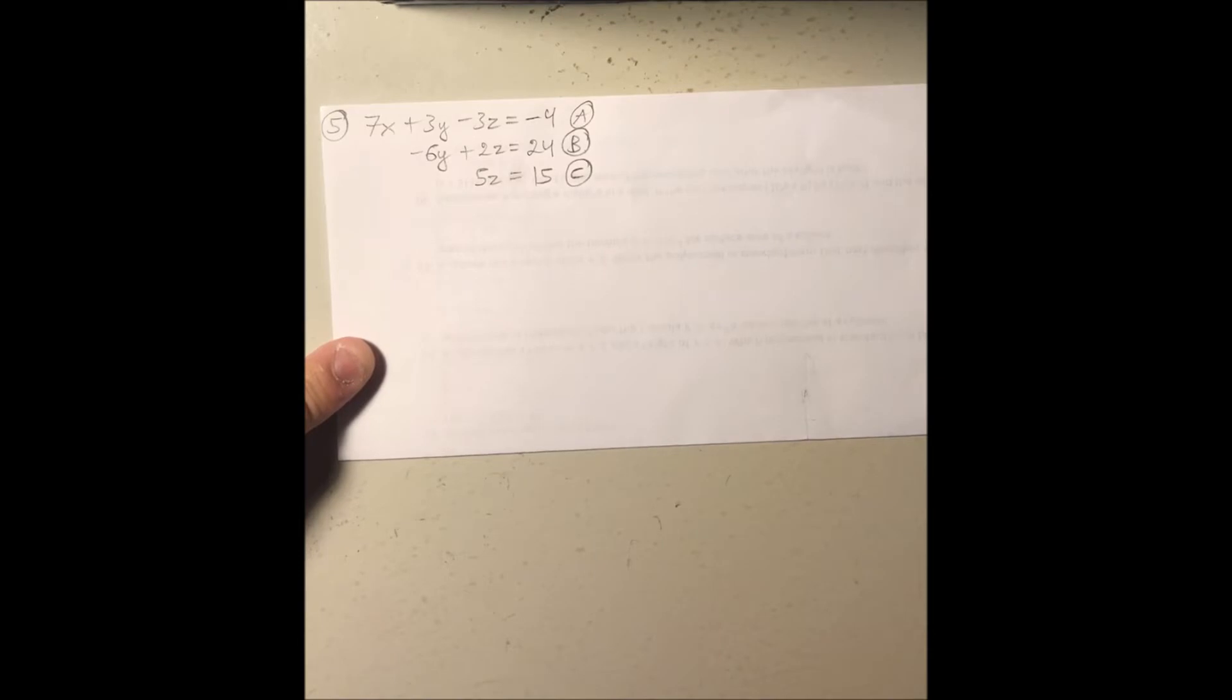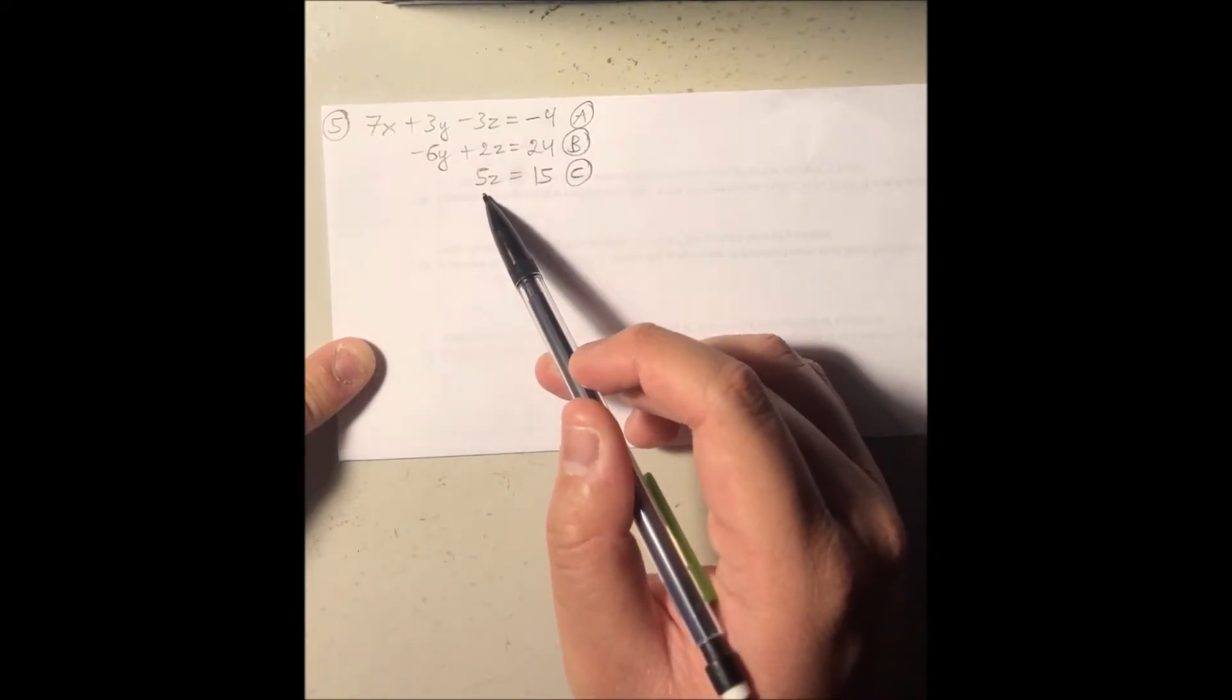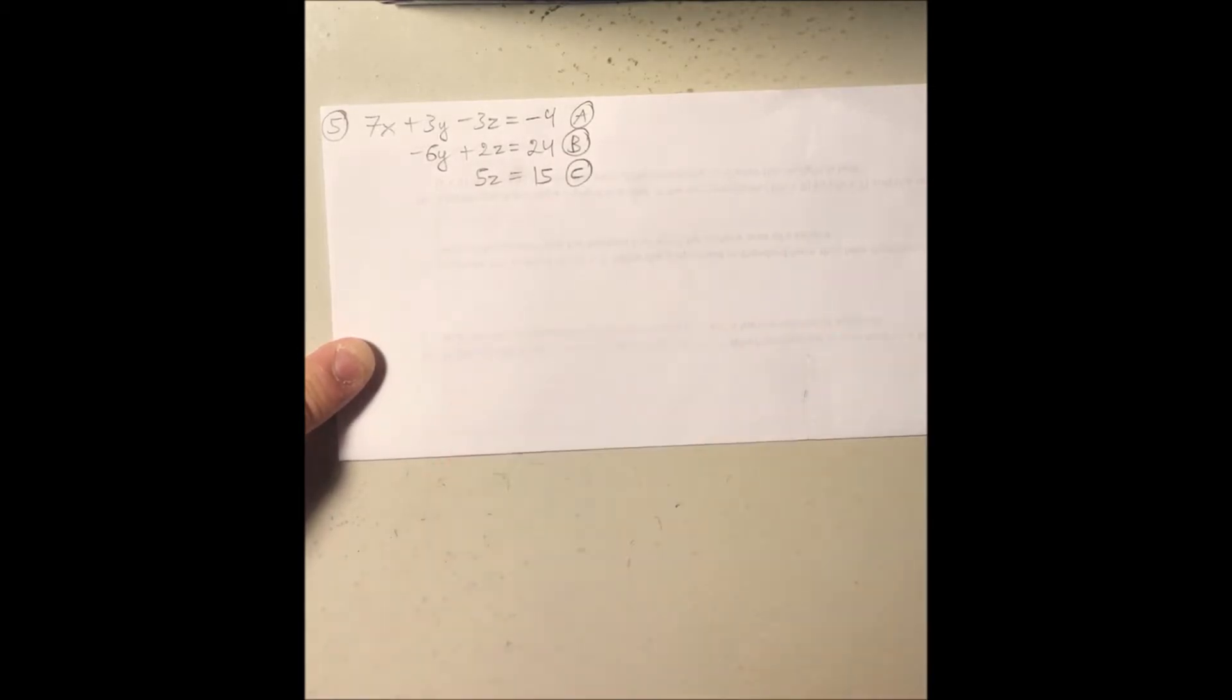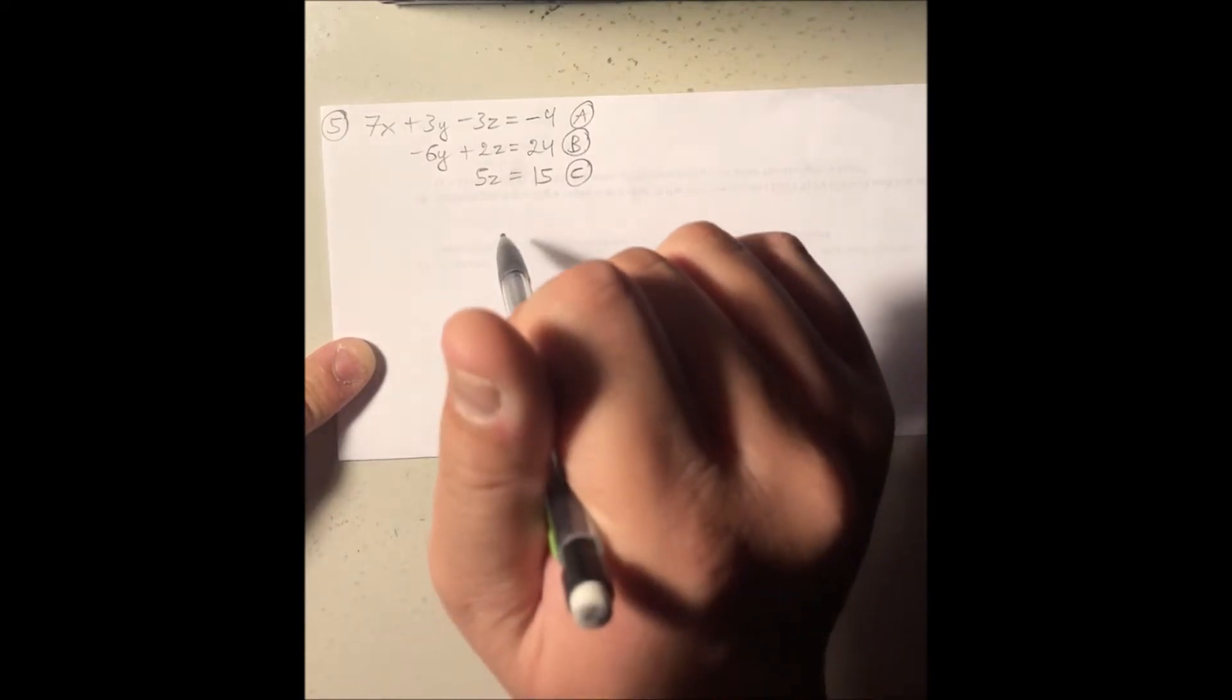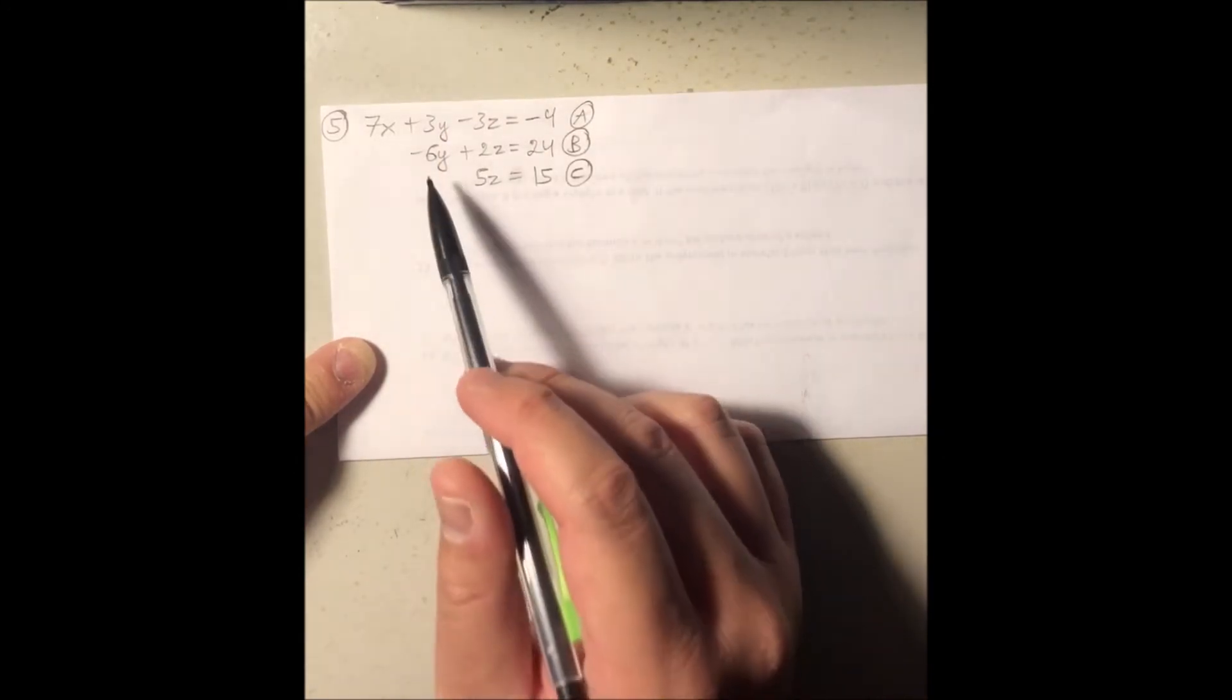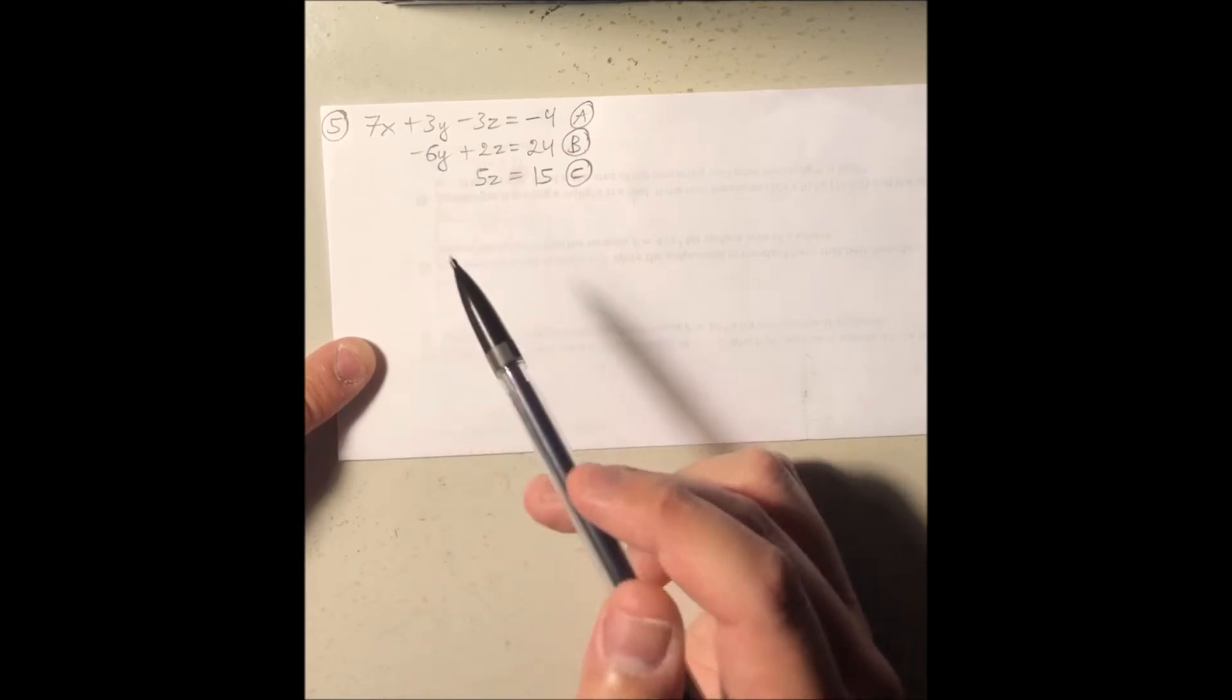But again, it's an optional step, so you guys don't have to do it unless it's more comfortable for you, but if you don't want to do it, then you guys can just go ahead and divide both sides by 5 in the z equation to solve for z, and then as in the fourth example, you just take the z value, plug it back into the B equation to solve for y, and then take the z and the y, plug it into the A equation to solve for the leftover x.